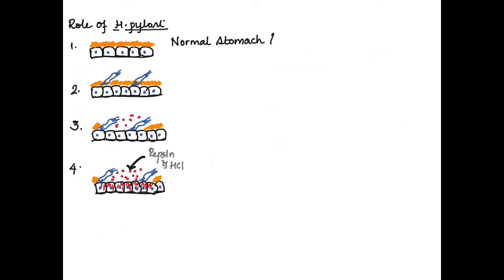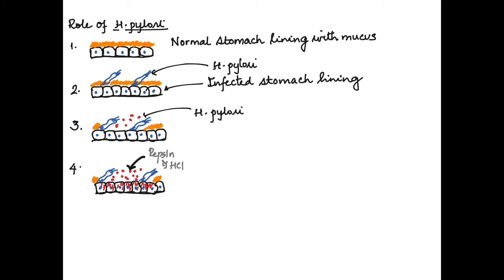So let us first see here, this is the normal stomach lining. Like we said before, the normal stomach lining has a main layer of mucus on the cells. Now when there is a Helicobacter pylori infection, this Helicobacter pylori starts to release an enzyme called urease.